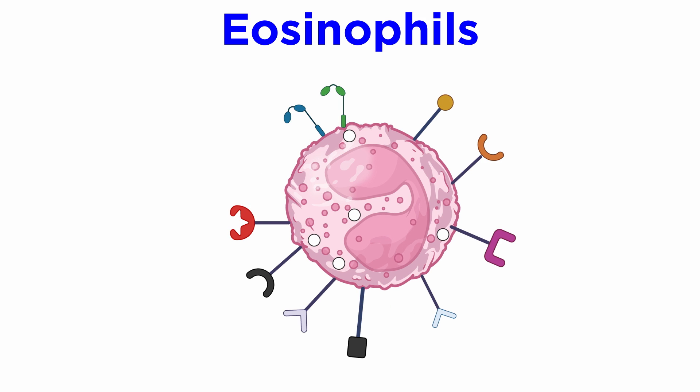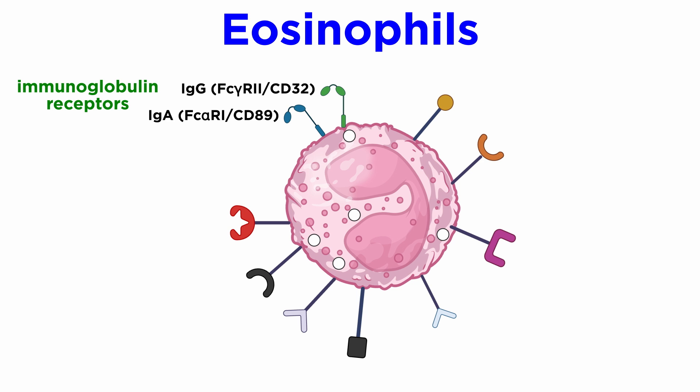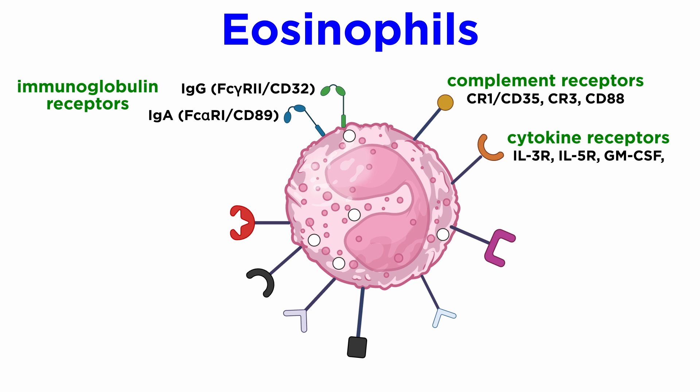Eosinophils express a wide array of cell surface molecules, such as immunoglobulin receptors for IgG (FcγR2-CD32) and IgA (FcαR1-CD89); complement receptors CR1-CD35, CR3, and CD88; cytokine receptors IL-3R, IL-5R, and GM-CSFR, which all promote eosinophil development; as well as receptors for IL-1α, IL-2, IL-4, IFN-α, and TNF-α; and chemokines CCR1 and CCR3.